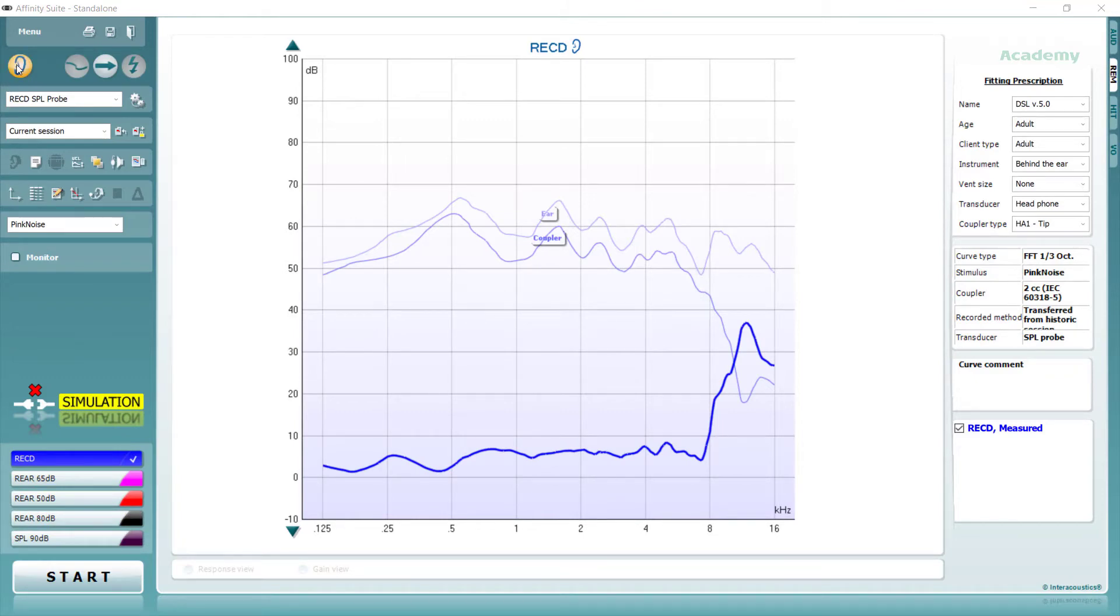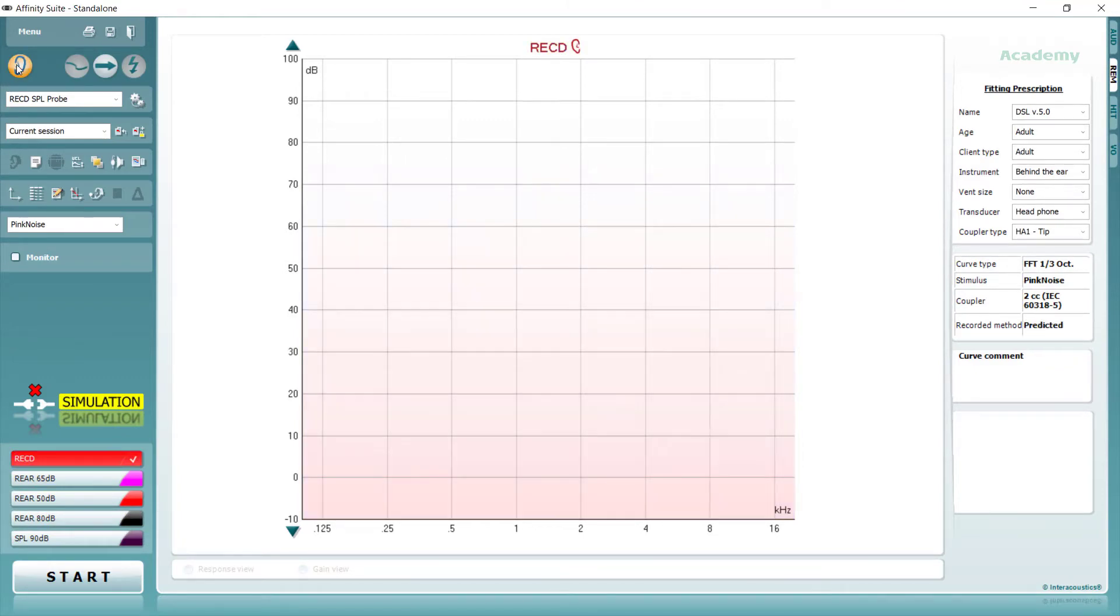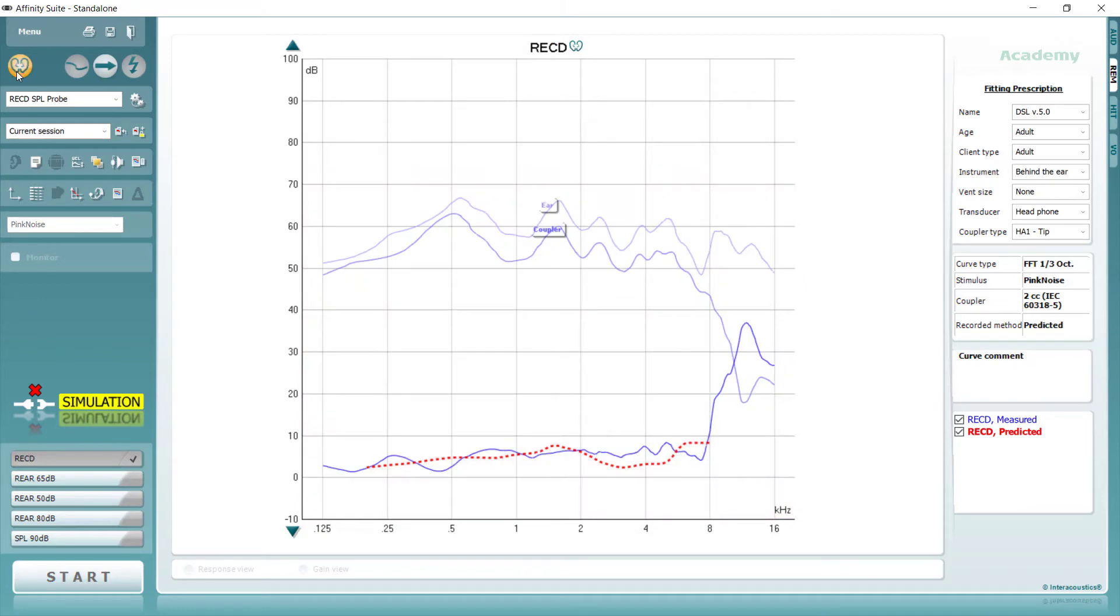In order to do this, you can ask the Affinity Suite to display the predicted RECD on the opposite ear to the one you have measured and then select binaural view to see them overlaid. Here, we can see a good correlation between our left-sided measured RECD and the predicted RECD shown in red. This can provide a useful comparison.